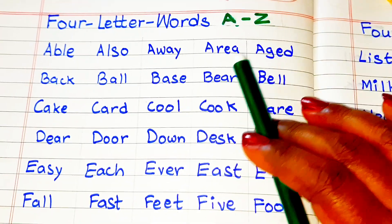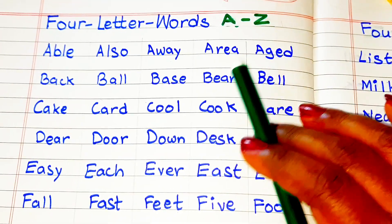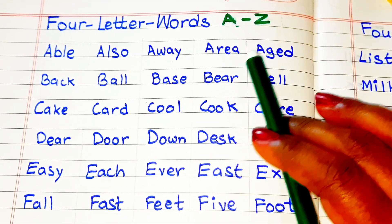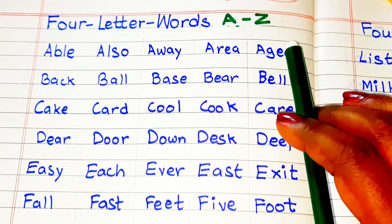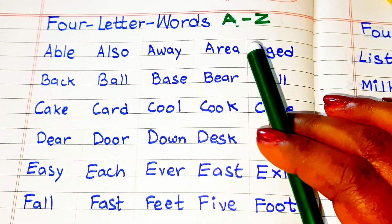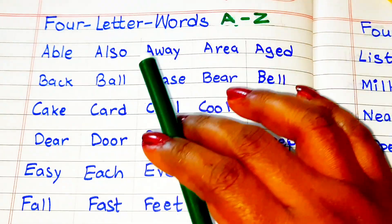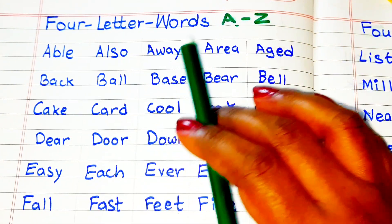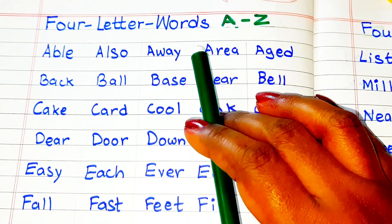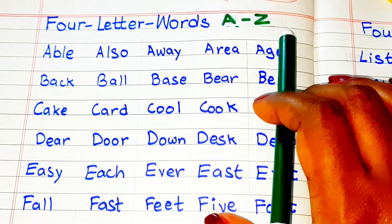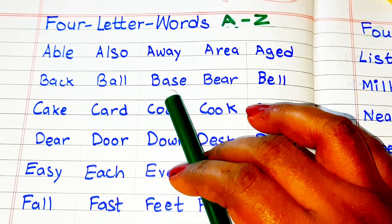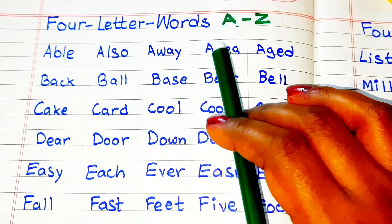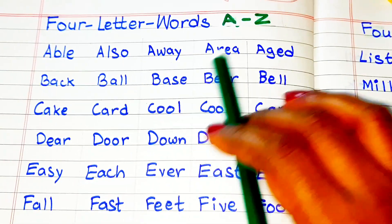Here I have prepared a list of 4 letter words from alphabet A to Z and mentioned 5 four-letter words from each alphabet. Now come read with me all these 4 letter words.